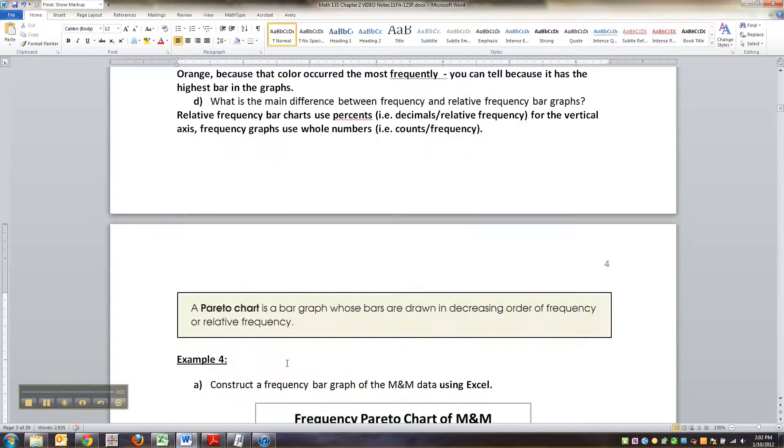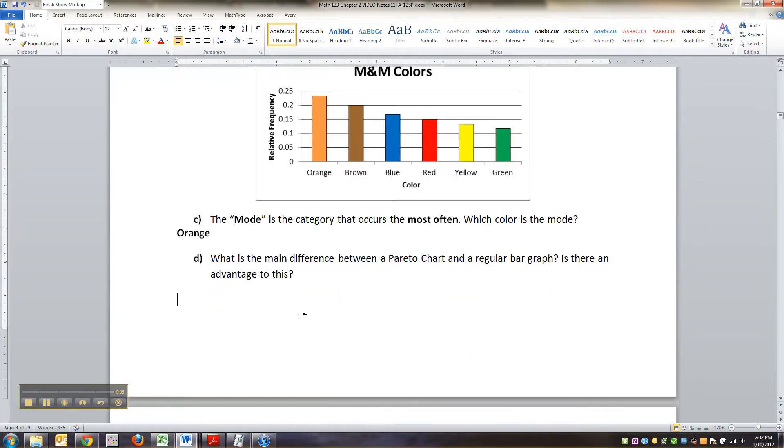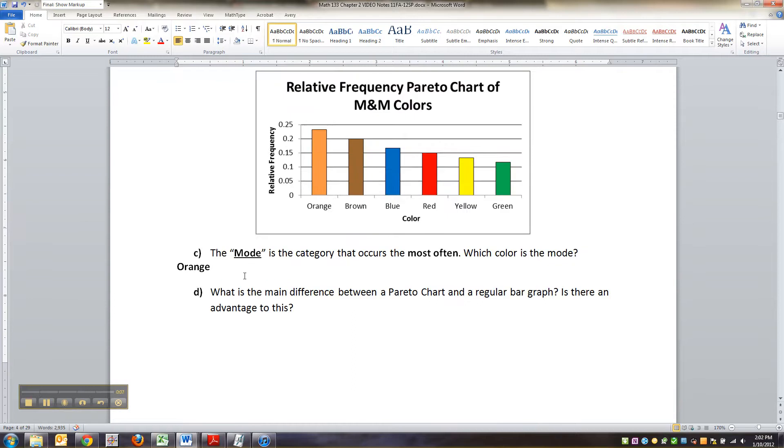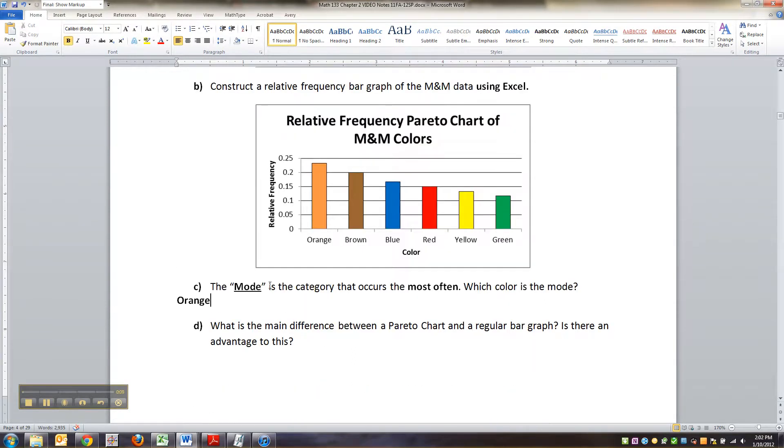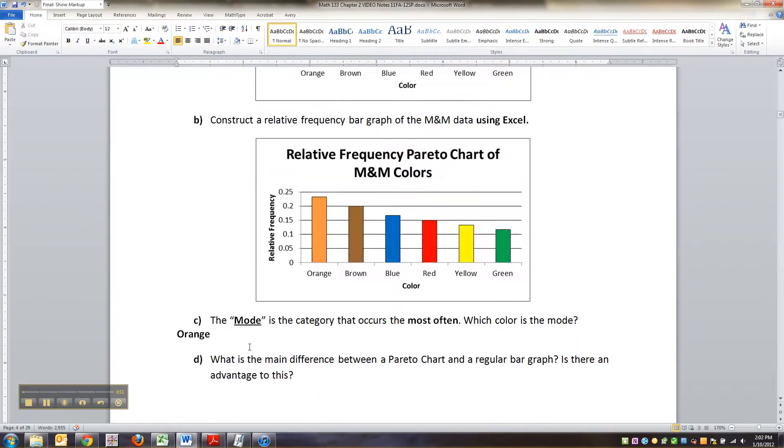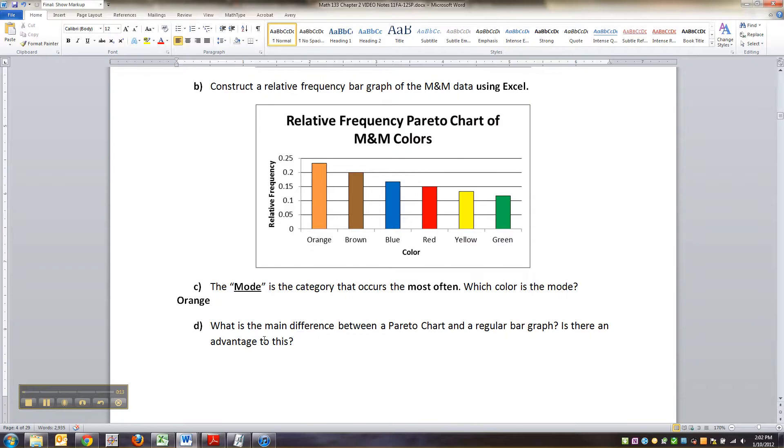So we were sitting right here, we figured out the mode again because the orange bar is the highest. Now what's the main difference between a Pareto chart and a regular bar graph?